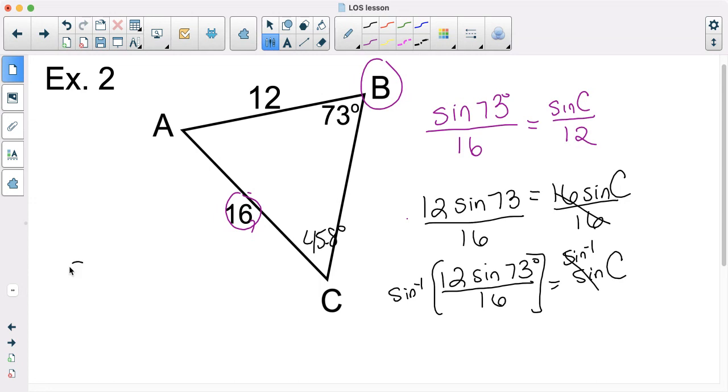Again, you can also prove it to yourself by doing sine 73 divided by 16, and then separately, sine of 45.8 divided by 12. And you should come up with really, really close, again with roundoff errors, to the same exact measure.